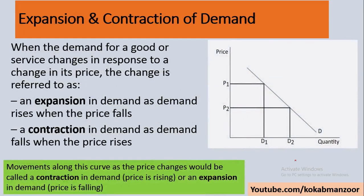Similarly with mobile phones. There is the concept of expansion and contraction of demand. Expansion means demand increases when the price falls — that is called expansion in demand. Contraction means demand falls when the price rises — that is called contraction in demand.